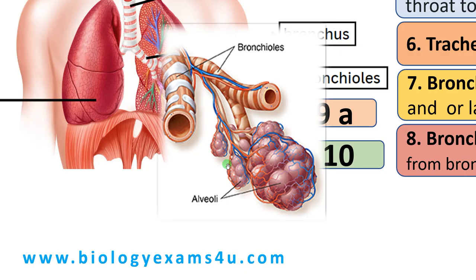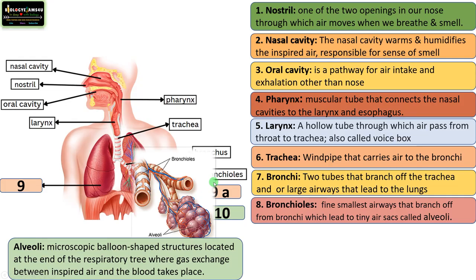Alveoli are microscopic balloon-shaped structures located at the end of the respiratory tree. They expand during inhalation, taking in oxygen, and shrink during exhalation, expelling carbon dioxide. These tiny sacs are the site where gas exchange between inspired air and blood takes place.